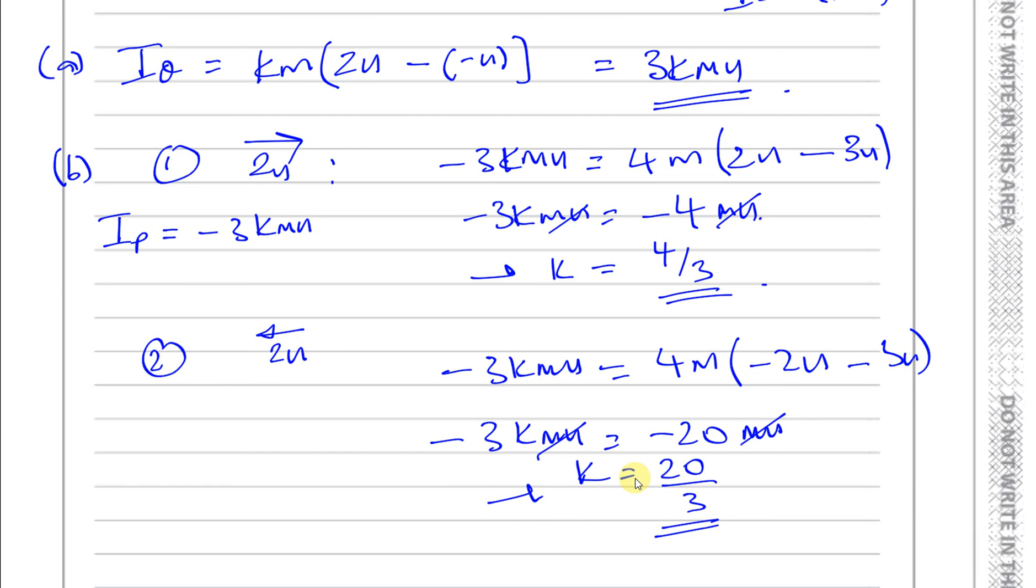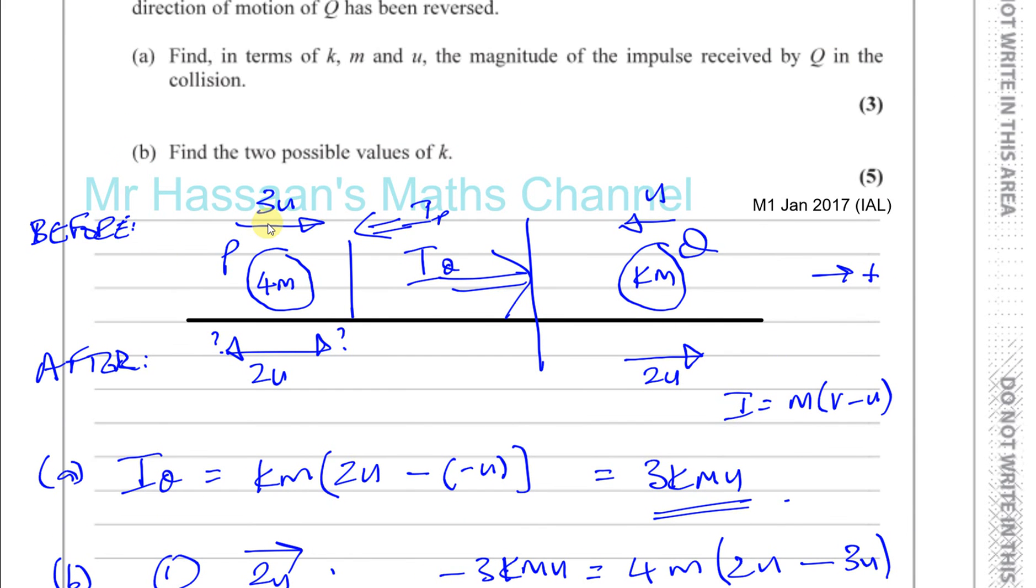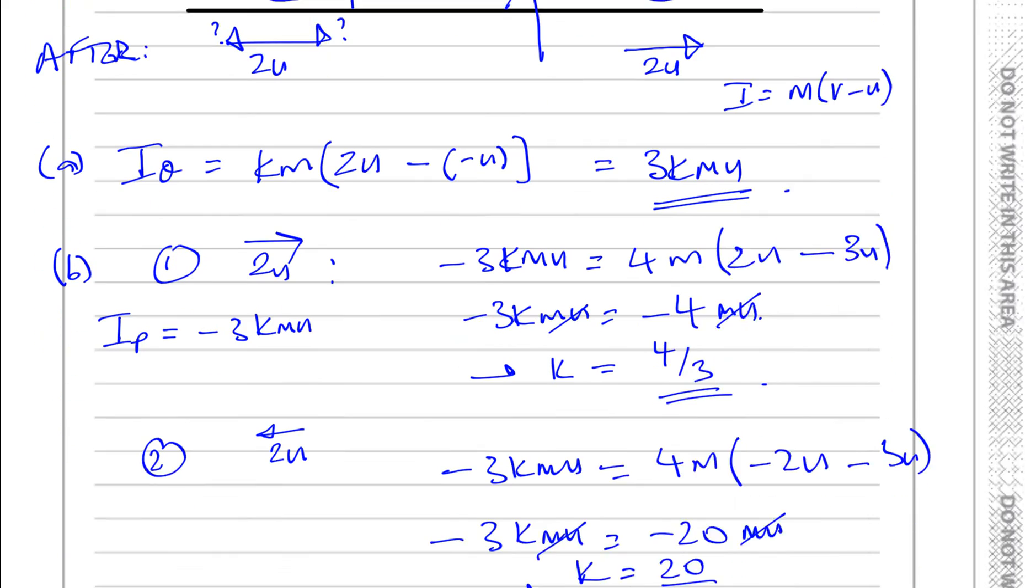We could have also answered it by using the change in momentum, in which case I could have said the momentum before is 3U times 4M minus U times KM, and that's equal to the momentum after. I could have taken the case where it's positive here, so 4M times 2U plus KM times 2U, and that would give me one value of K, which would be the lower value. And then for the other value of K, the 2U to the left, the momentum after would be 4M times minus 2U plus KM times 2U, and that would have given you 20 over 3. So there we have the answer to this question.